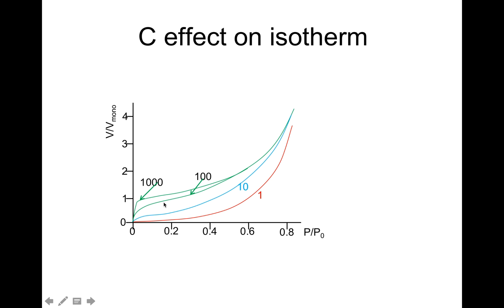If we move to C equals 100, then we begin seeing isotherms similar to type 1 and type 4. And by the time C equals 1000, there is a drastic increase in adsorption at low pressure, as given by the second green curve shown.